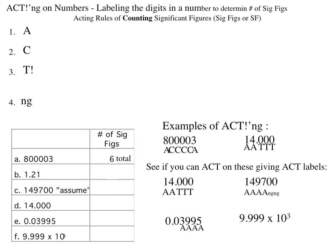For the next number, all non-zero digits are significant. Acting, we can give them letter A. The number contains no captive zeros and no trailing zeros. And the leading zeros are not significant. They just place the decimal point.